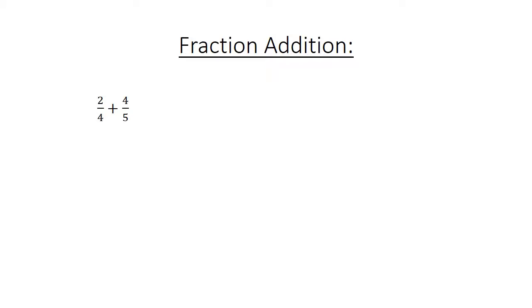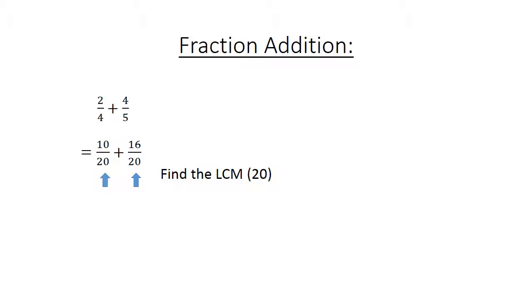Fraction addition. Two over four plus four over five equals. Find the lowest common multiple: ten over twenty plus sixteen over twenty equals twenty-six over twenty, which equals one and three over ten.